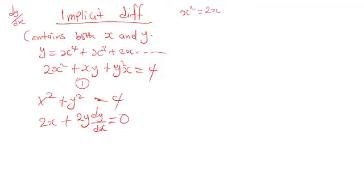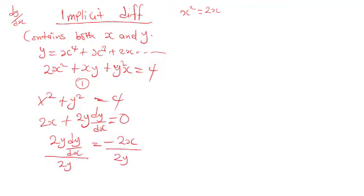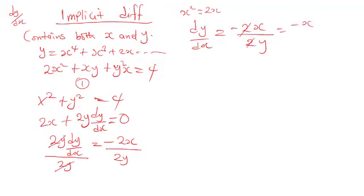The right-hand side — differentiation of a constant is zero. So taking 2x to the other side: 2y dy/dx equals minus 2x. To get dy/dx, divide both sides by 2y, so that 2y cancels out. The value of dy/dx equals minus 2x over 2y. Since 2 cancels 2, what remains is dy/dx equals minus x over y.